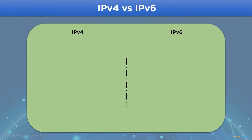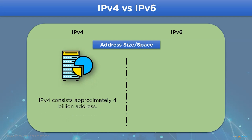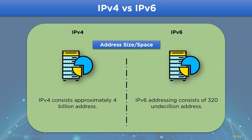Moving on, we have the number of addresses in each IP. In the case of IPv4, the total number of addresses is nearly 4 billion, whereas in the case of IPv6 version, we have 320 undecillion addresses.